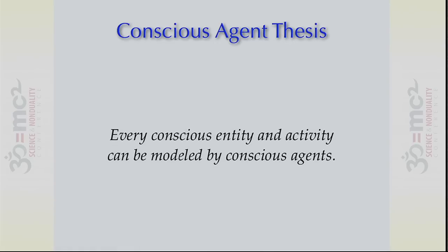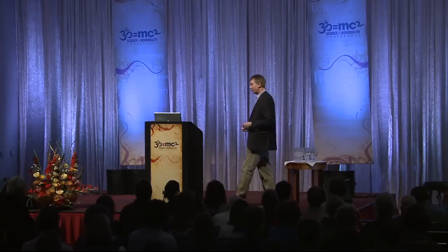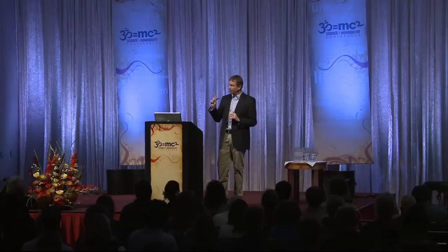Now here's where I go out on a limb with a risky claim. I call it the conscious agent thesis: that every conscious entity and every conscious activity can be modeled by interacting conscious agents. It's in a similar spirit to the Church-Turing thesis in the theory of computation. Turing proposed the Turing machine and claimed that every effective procedure could be written as an instance of that abstract formalism. That became the foundation of computer science. Similarly, I'm proposing this as the formalism that handles all of consciousness. It's falsifiable — if you find a counterexample, I'm wrong.